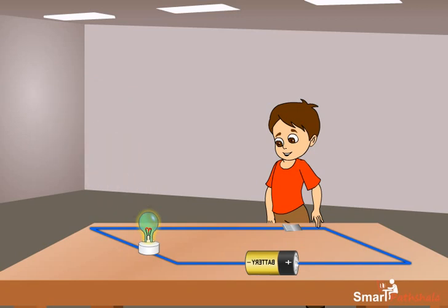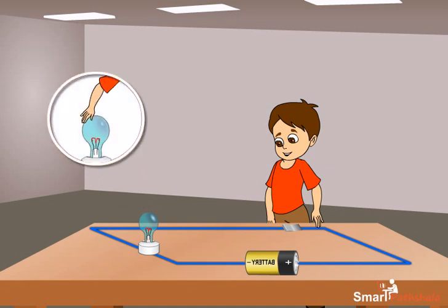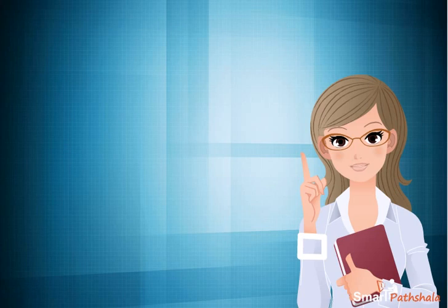Now move the switch back to the OFF position. Wait for a minute and touch the bulb again. We can feel that the bulb is not hot now. This indicates that the bulb becomes hot when an electric current passes through it.